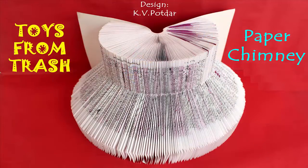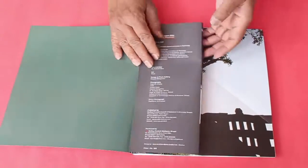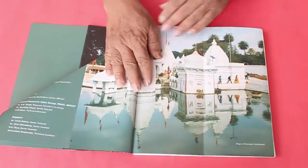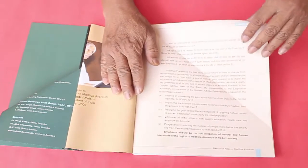Now take an old book or magazine with many pages. Fold the first page into half in the middle, the second page into a triangle. The third page once again into half and the fourth page into a triangle.